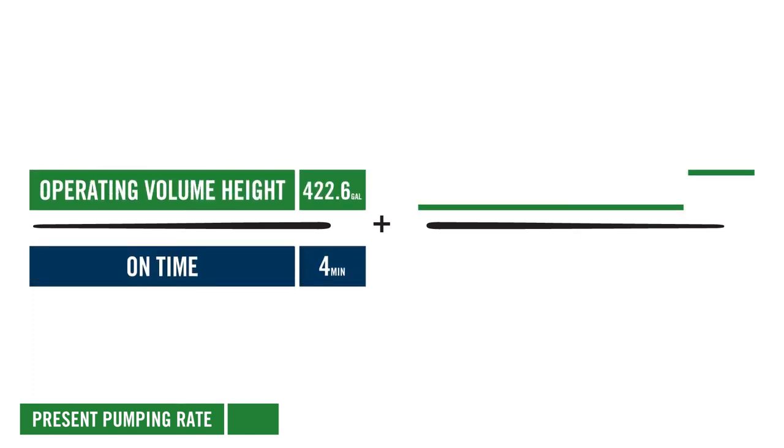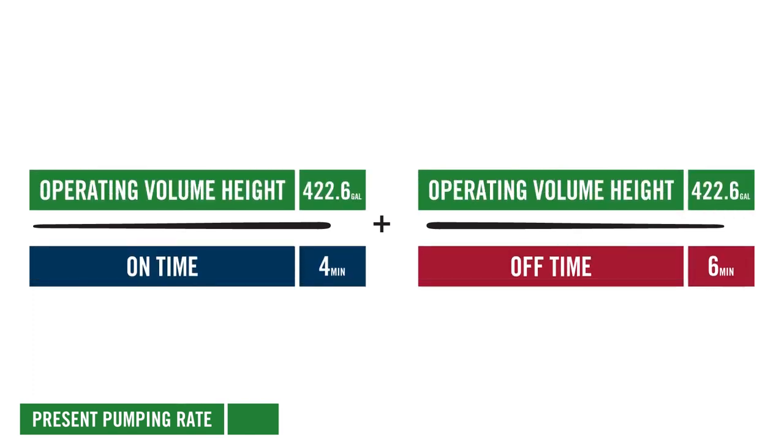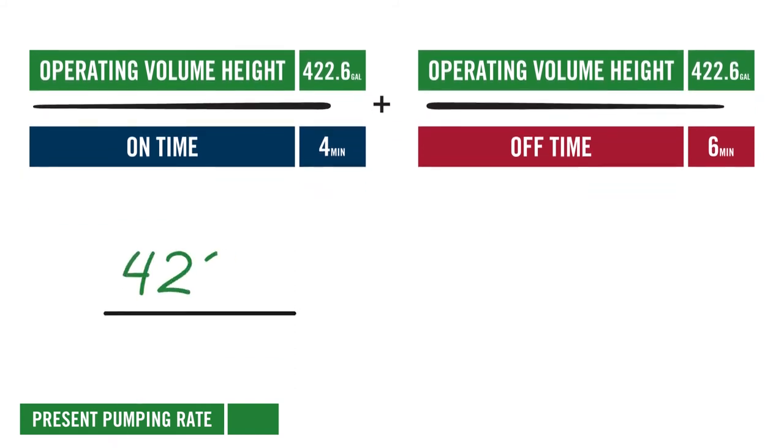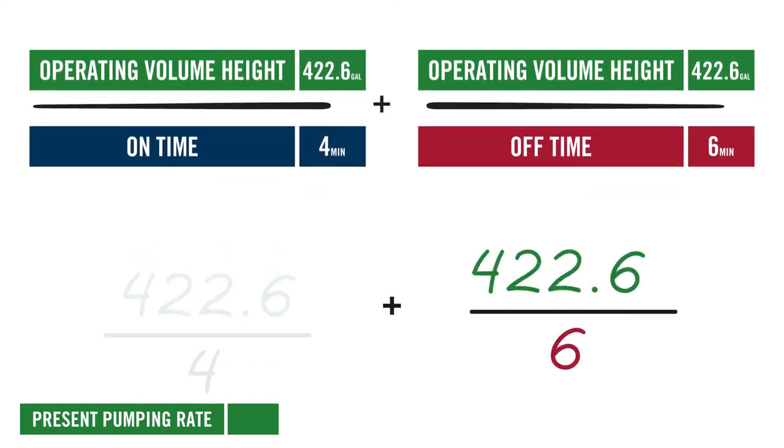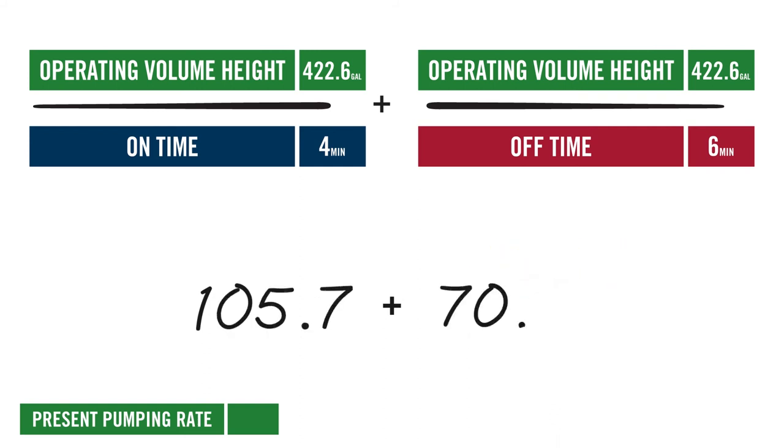Finally, calculate the pumping rate with the following formula: Divide your operating volume by both the on-time and the off-time and combine those two numbers.